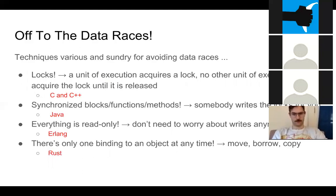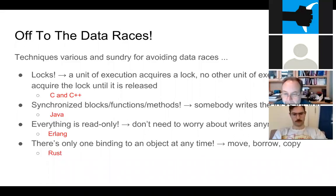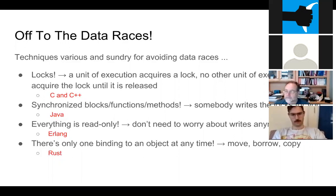There are various techniques for avoiding this kind of race condition. The first is locks, which you'll see in C and C++. A unit of execution acquires a lock, and while it holds the lock no other unit of execution can acquire it. Java made this more explicit with synchronized blocks and methods — instead of explicitly managing a lock, you tell the compiler this piece of code should only ever be run by one thread at a time.